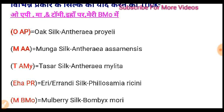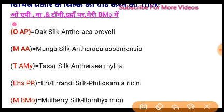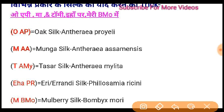There are five people who ask about this. What is the trick of this? OAP. What is the trick? OAP. Maa and Tommy are here. My BMO. Then what is the trick? OAP means oak silk. It means oak silk. And AP — the trick of this is oak silk, turned away from A.